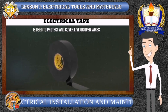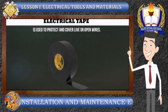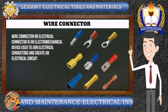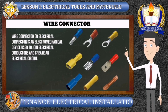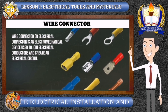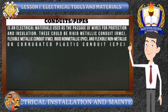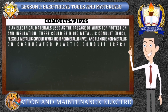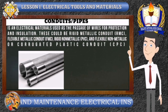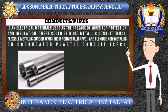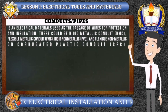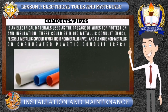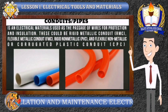Electrical Tape. Electrical tape is used to protect and cover live or open wires. Wire Connector. A wire connector or electrical connector is an electromechanical device used to join electrical conductors and create an electrical circuit. Conduits or Pipes. A conduit is an electrical material used as the passage of wires for protection and insulation. This could be rigid metallic conduit (RMC), flexible metallic conduit (FMC), rigid non-metallic conduit (PVC), or flexible non-metallic corrugated plastic conduit (CPC).